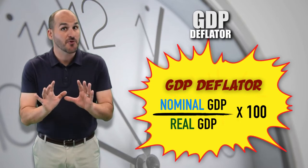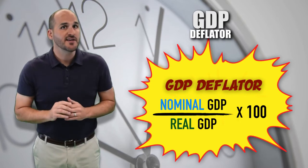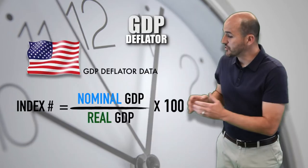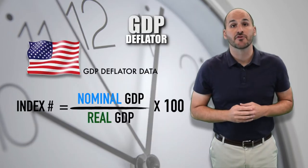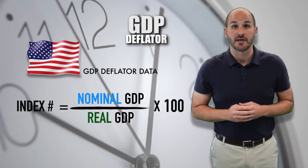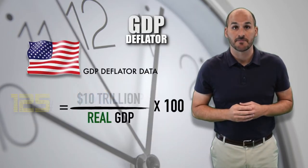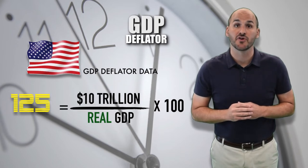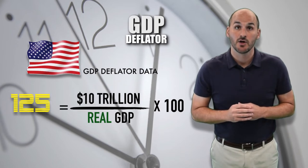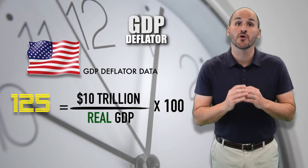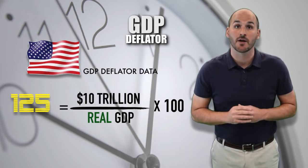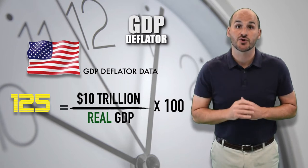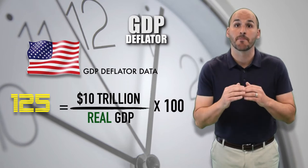Don't be afraid — it's easy algebra, and I'm going to walk you through it. Here we have the GDP Deflator data for the United States economy in 2016. We need to find the 2016 real GDP for the United States economy to determine whether or not the United States economy experienced economic growth or contraction compared to a base year.